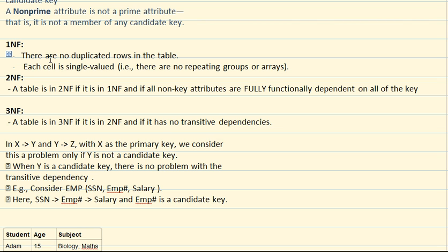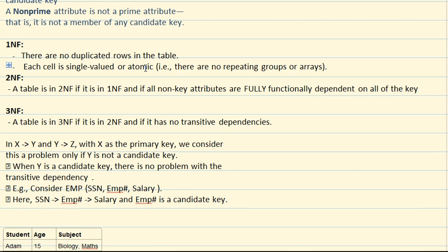The first rule about 1NF — first normal form — is that there have to be no duplicate rows in the table. Also, each cell has to be single-valued, or atomic. Some attributes are multivalued or composite attributes, so the first rule of normalization is to separate out those multivalued values. One field cannot have more than one value; it has to have just one atomic value. So 1NF does not allow multivalued or composite attributes.